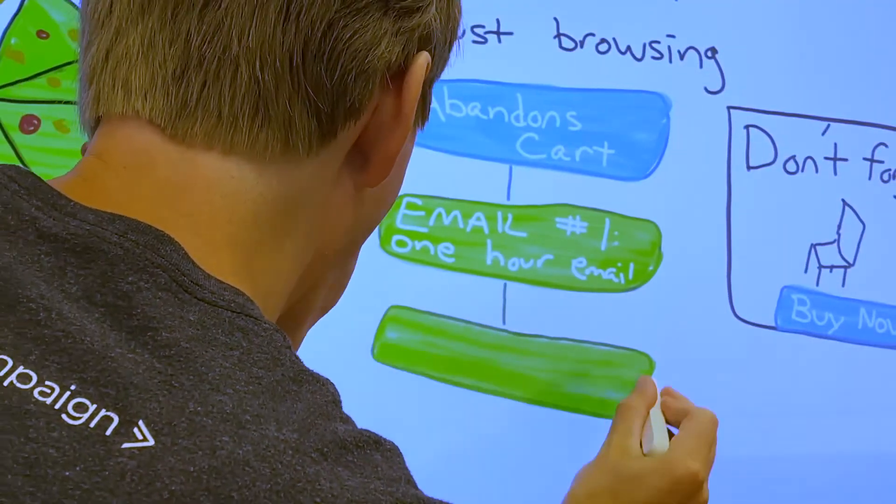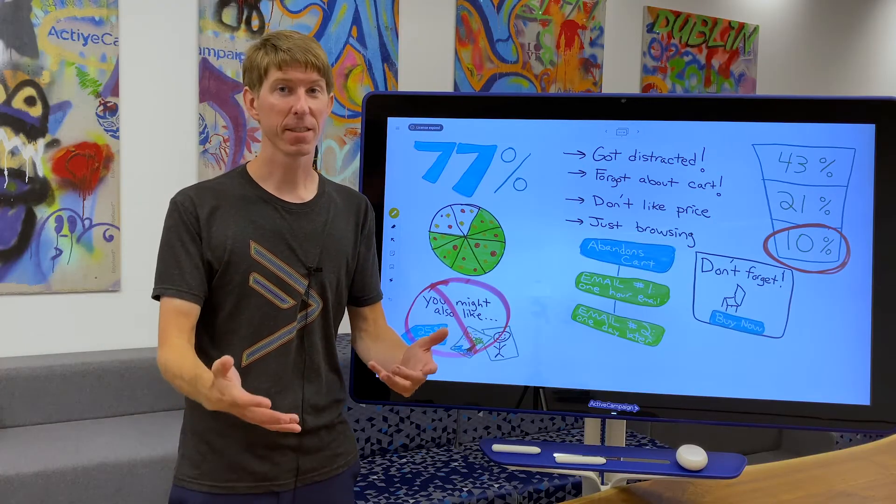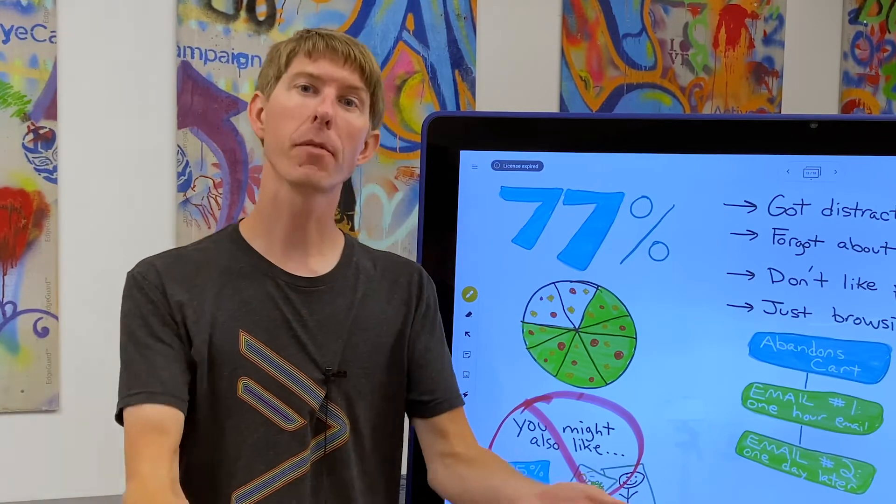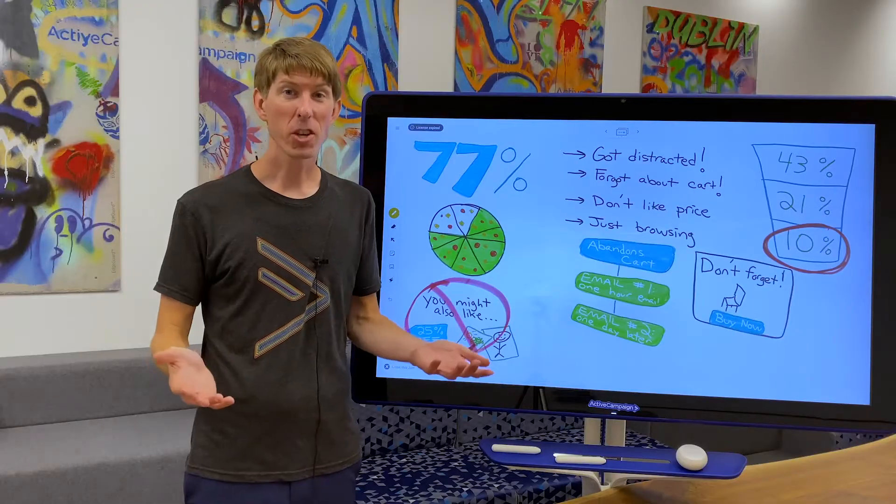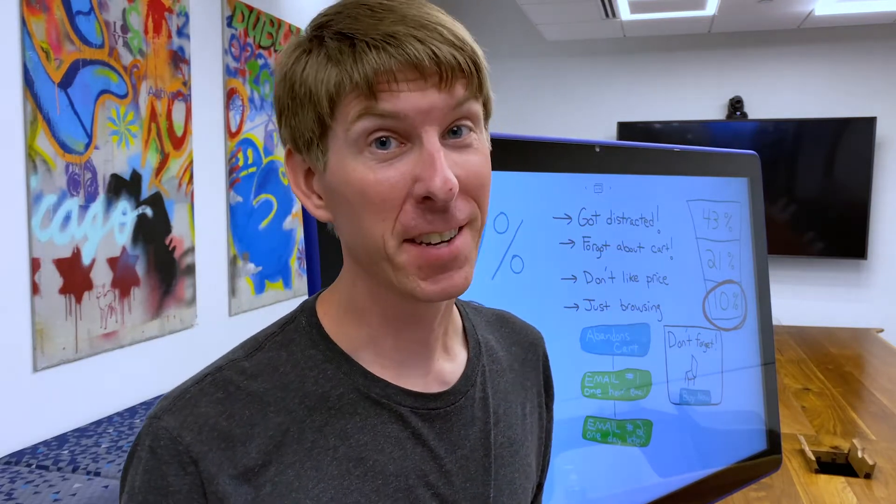This brings us to email number two, the one-day-later email. There are many reasons someone might have missed your first email. Maybe they left work and you have their work email. Maybe they were shopping at night and just went to sleep. Shopping at night is the best.